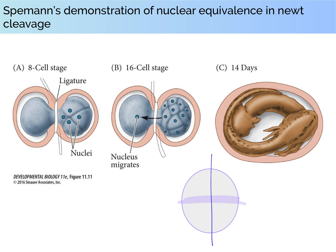He constricted the egg so that nuclear divisions would only happen on one side of the embryo. After a period of time, sometimes as late as the 16-cell stage, one of the nuclei would manage to escape the constriction and move into the region that did not previously house any nuclei, at which point cleavage would begin on that side as well. When the two sides were fully separated by pulling tightly on the hair, two genetically identical larvae would develop, with one being more developed than the other. From these results, Spemann speculated that the nuclei of the early amphibian embryo were equivalent and thus capable of giving rise to normal larvae.